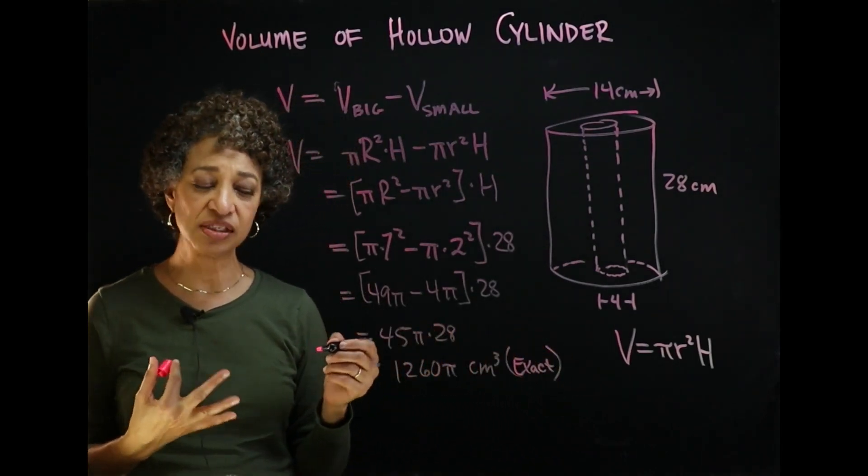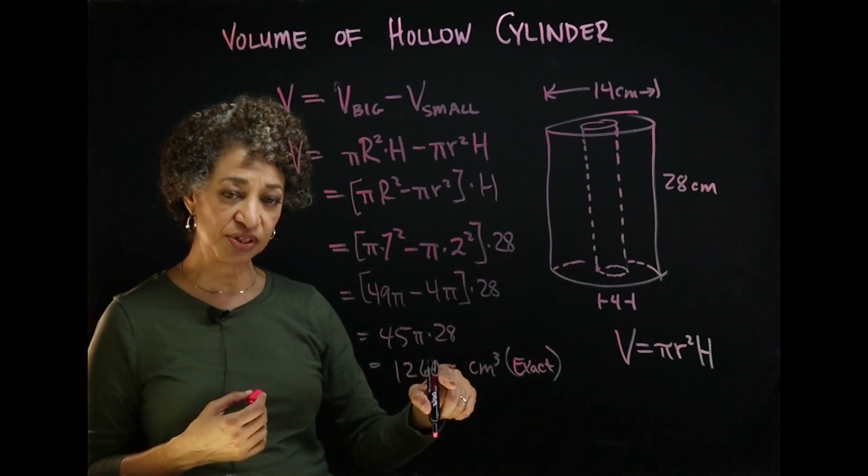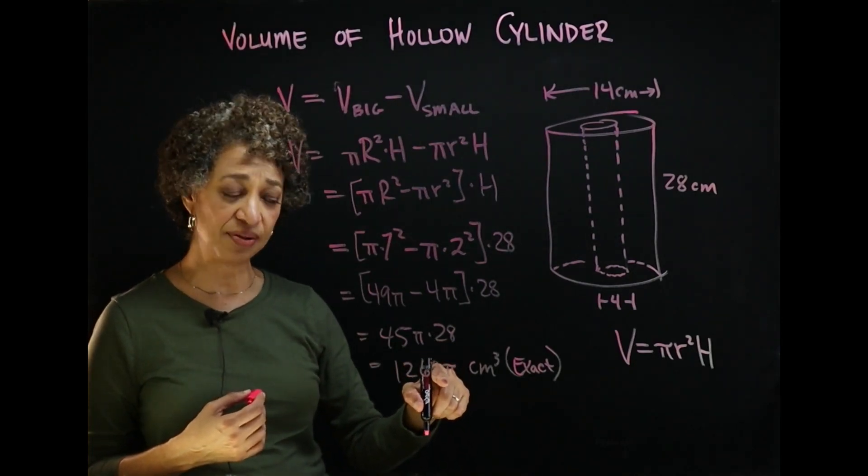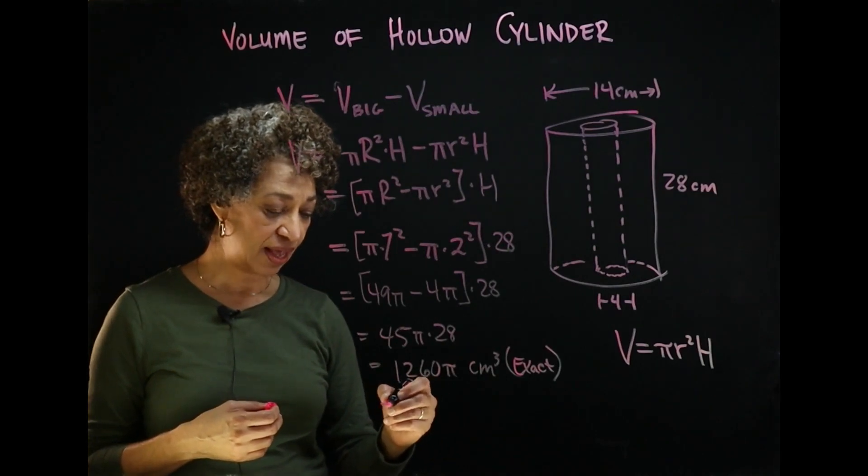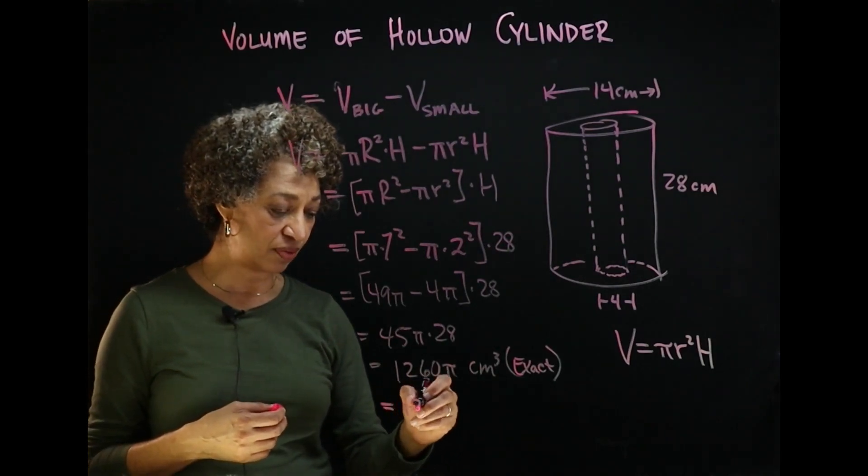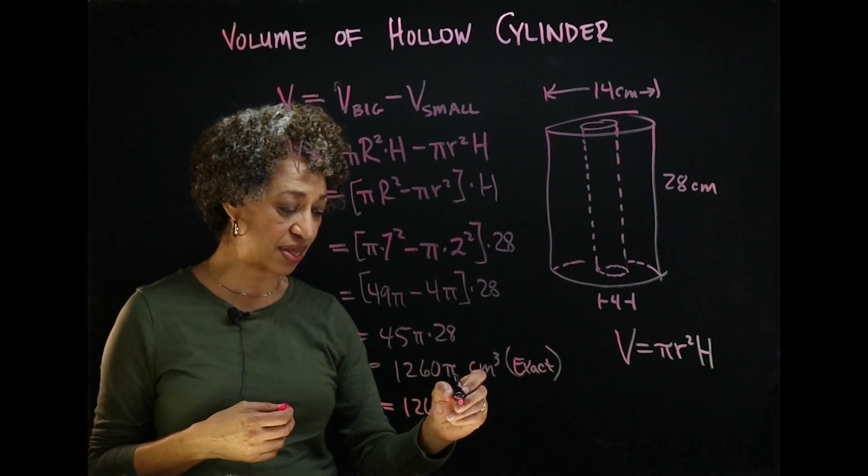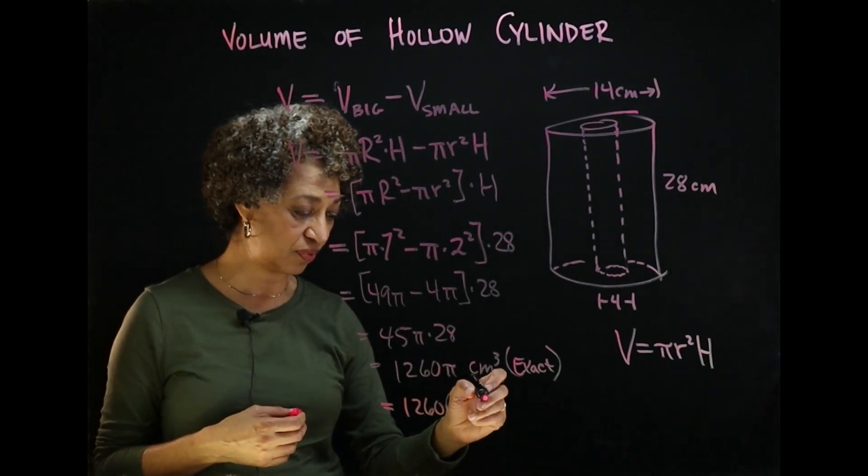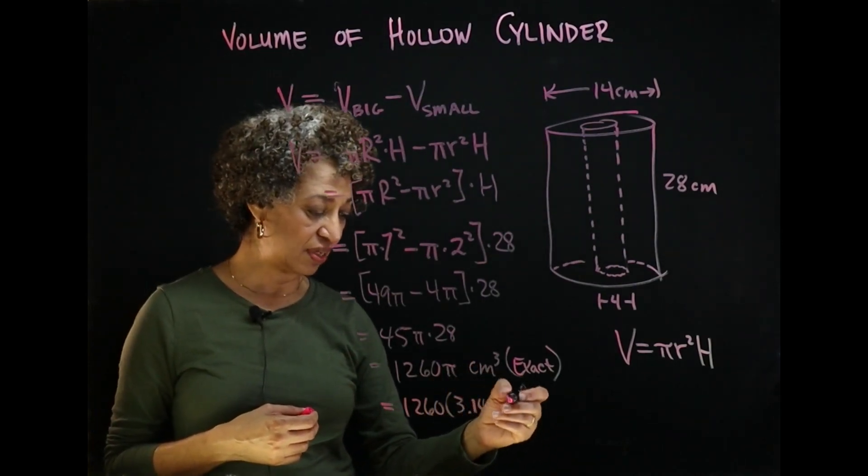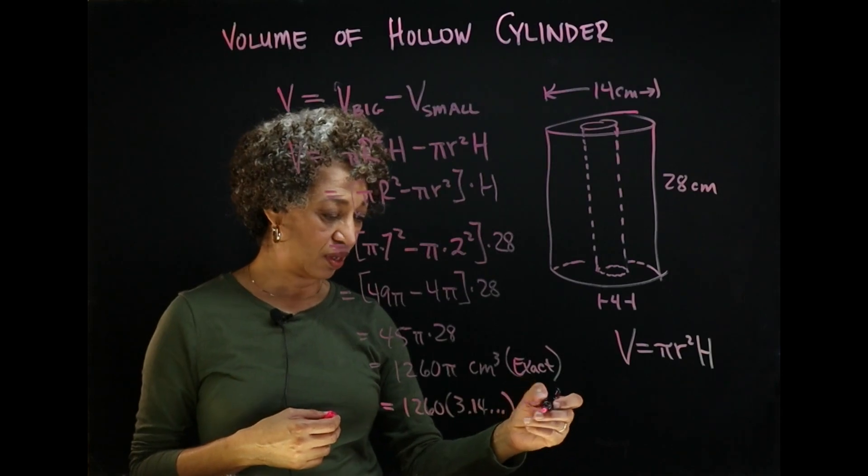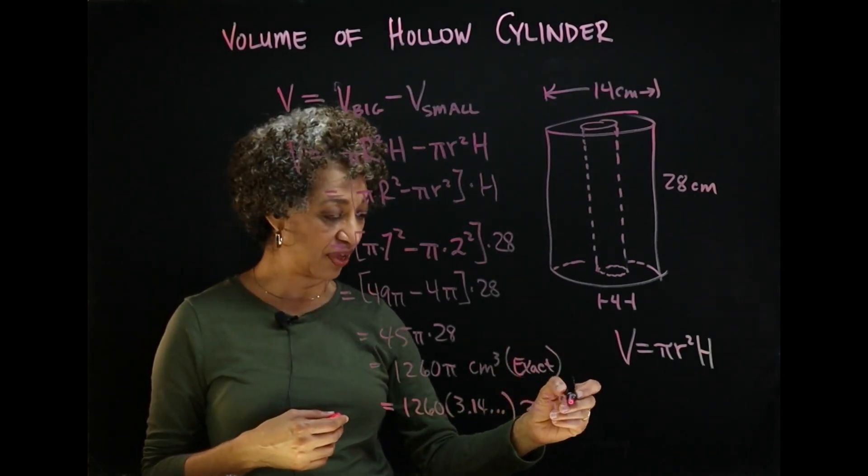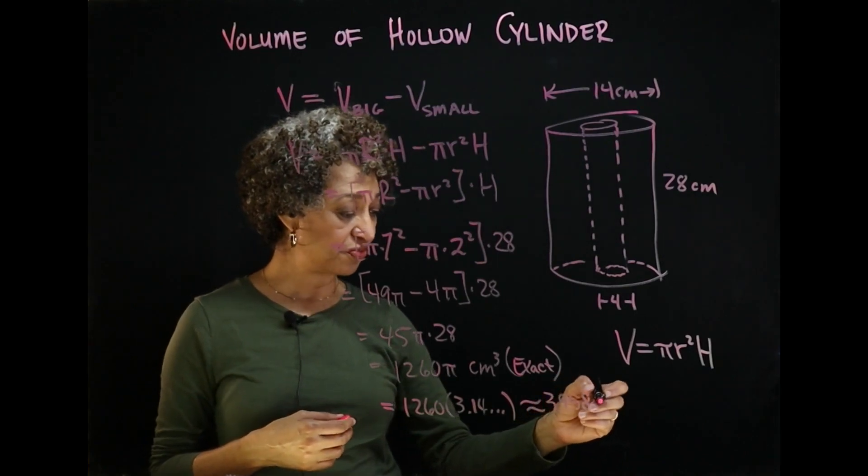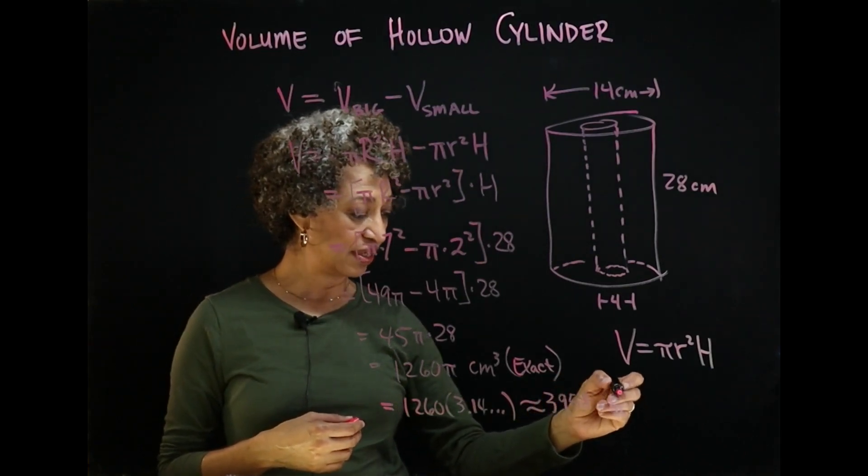If you would like an approximate answer, we could substitute an approximation for pi, 3.1415, etc. And we're going to get 1260 times that approximation, which gives us, I did it for you already, 3958 cubic centimeters.